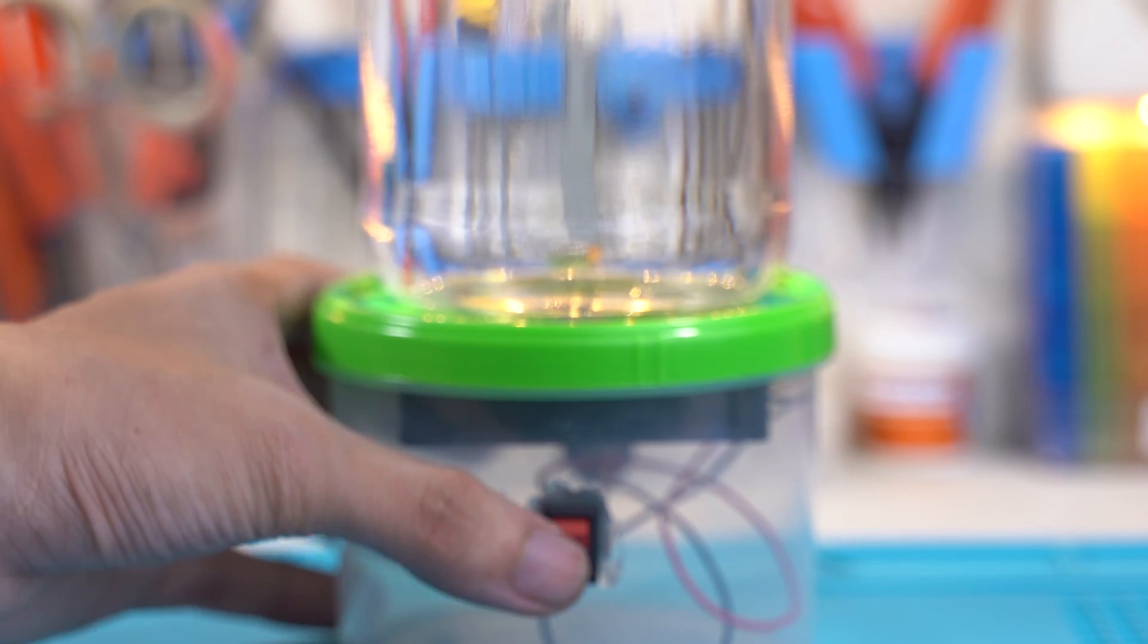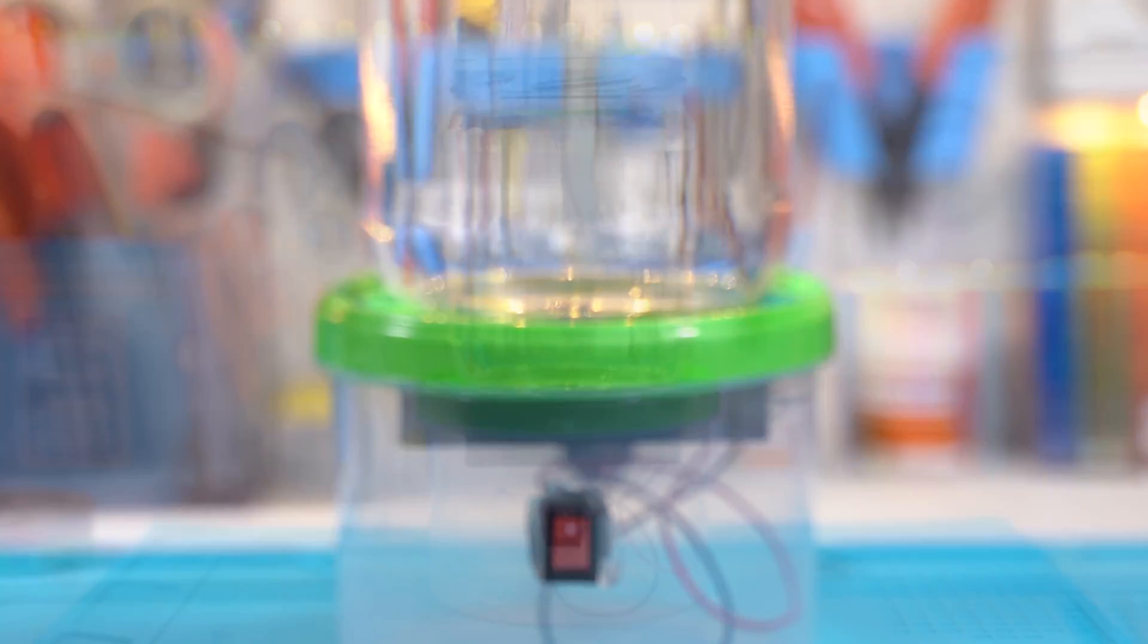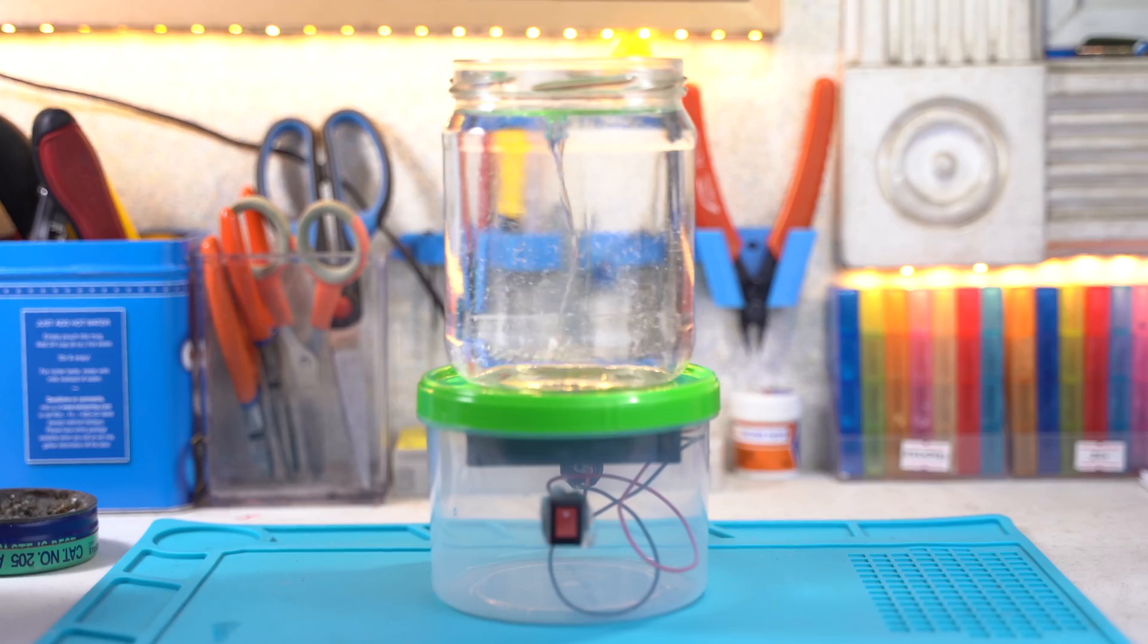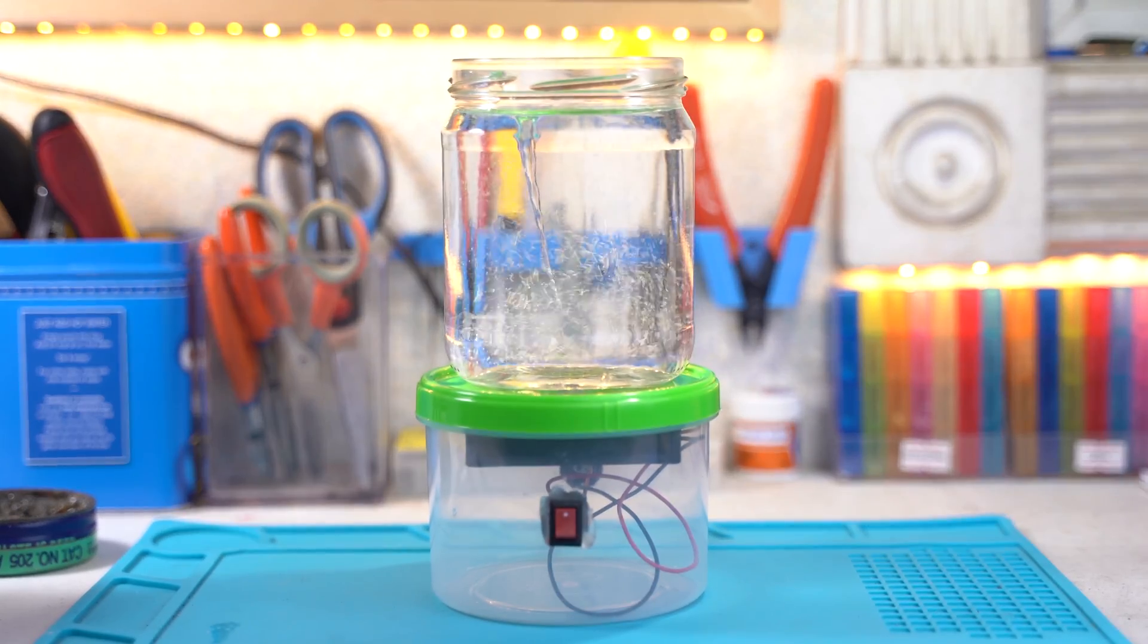And now you have a magnetic stirrer. Put a jar on top, drop a small magnet, and turn on the switch. Your stirring magnet should spin really fast, creating a mesmerizing vortex on your liquid solution.